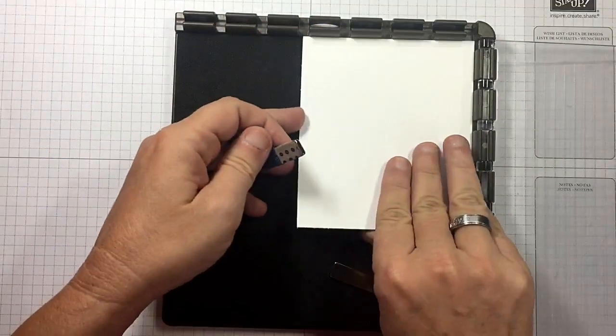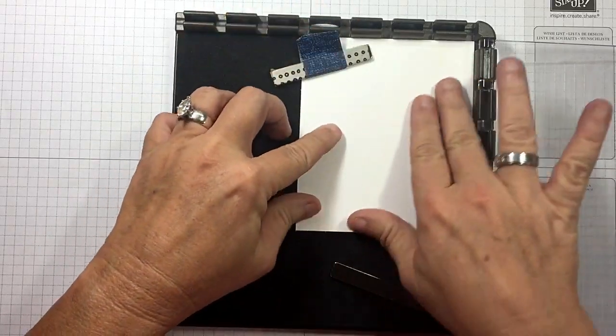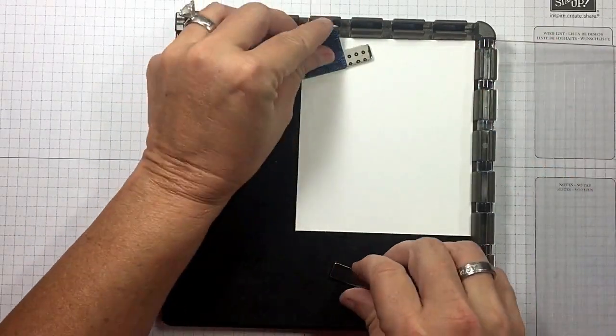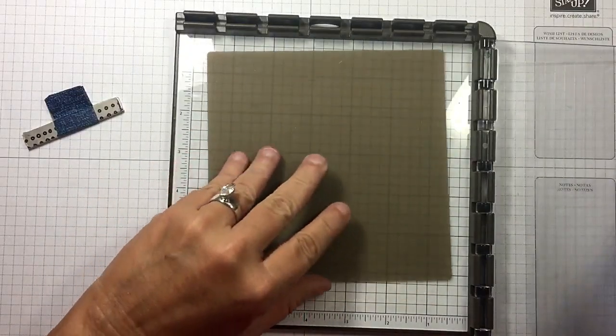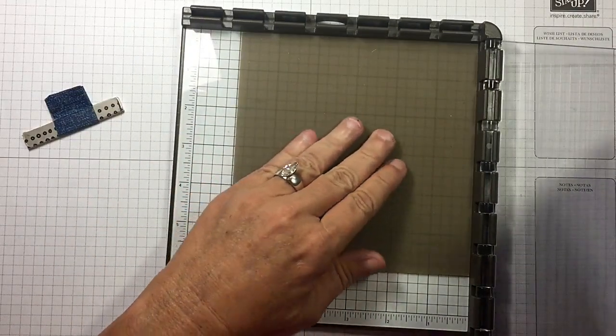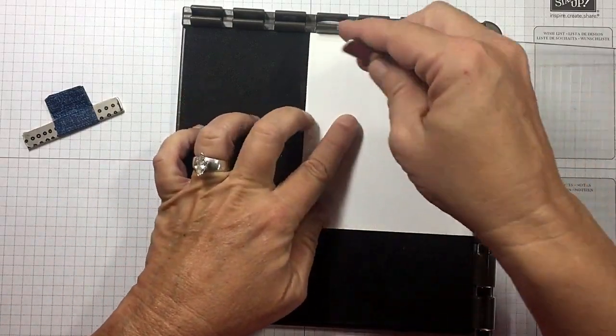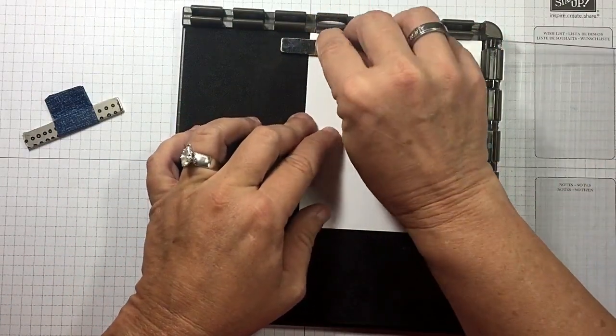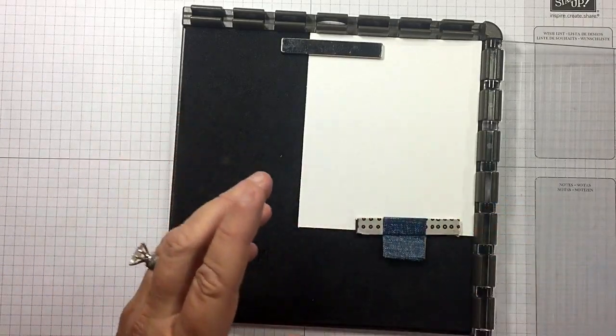So I'm going to take a piece of Whisper White and I'm going to put it all the way up in the corner. You know what I need to do, let me show you real quick. Underneath here I've got my silicone mat, gives me just a little bit of extra oomph.